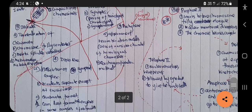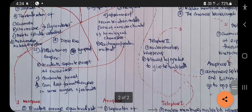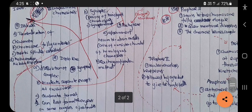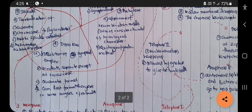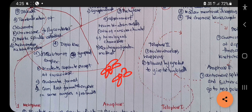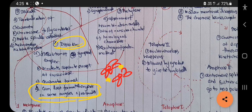The next part is diplotene. At this time the synaptonemal complex formed during zygotene gets dissolved. The bivalents get separated except at the sites of crossovers. Where the crossover takes place there will be attachment; others will get separated. Chiasmata are formed during diplotene, and in some oocytes of vertebrates this stage can last for months.